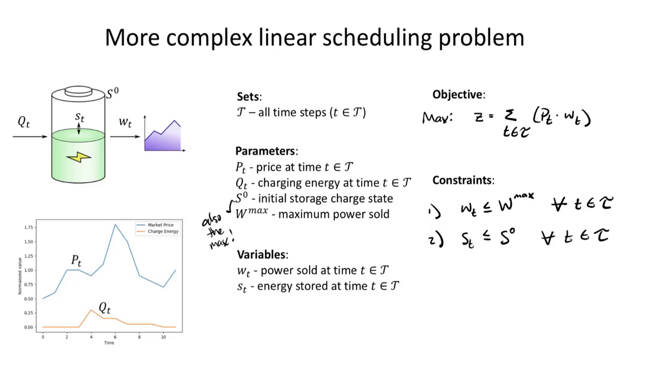So we're going to say our third constraint will be I want to make sure S sub T minus S sub T minus 1. So that is the charge of storage now versus the charge of storage in the last time period. So that's going to be equal to the difference between the energy that's coming in and leaving, right? The net charge or discharge.